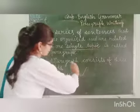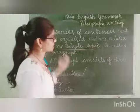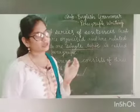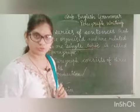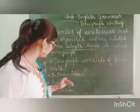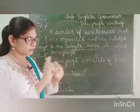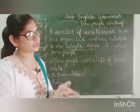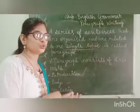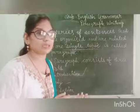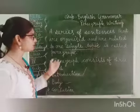First of all, we will write an introduction — what the topic is about. Like if it is about my mother, I will tell her name and her occupation, what work she does. After that comes the body of the paragraph. In the body, we write the main information: what is her behavior, how does she behave, what does she do, what does she like and not like — we mention all these things in the body of the paragraph.